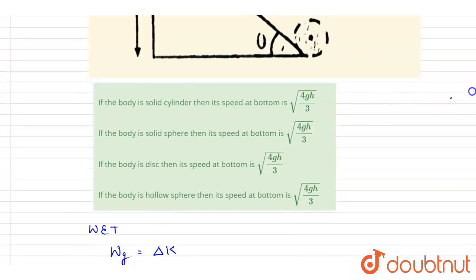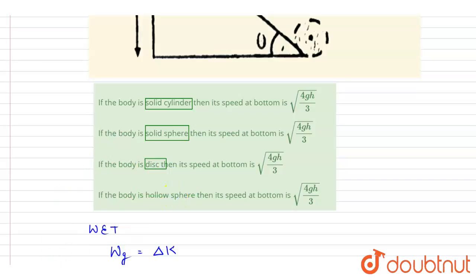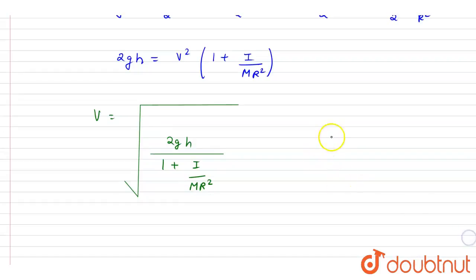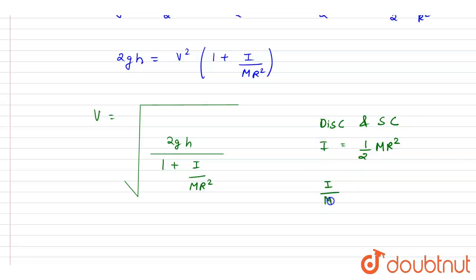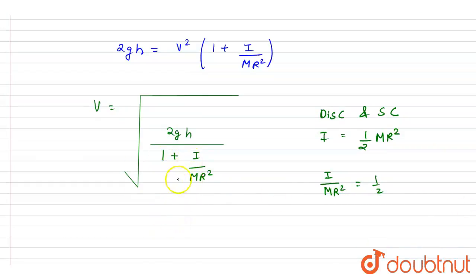For a solid cylinder and a disk, the moment of inertia is mr squared by 2, so I by mr squared equals one half. Substituting: the denominator becomes 1 plus one half, which is 3 by 2. So velocity equals the square root of 2gh times 2 by 3, which gives the square root of 4gh by 3.